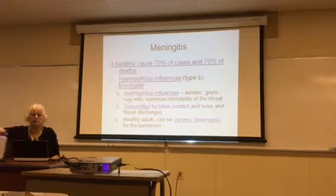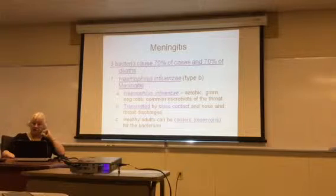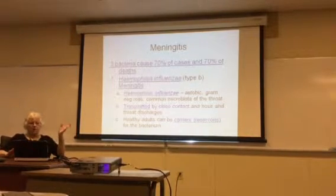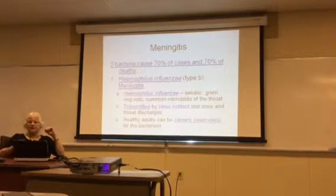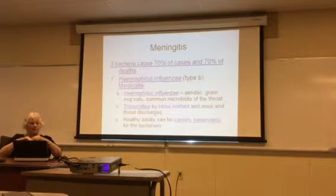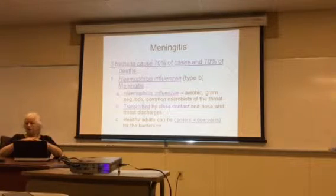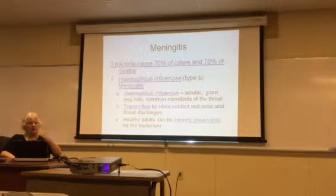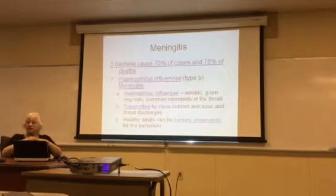Three bacteria cause 70% of the cases and 70% of the deaths. The first type is Haemophilus influenzae type B. Years ago they thought it caused influenza, but now they know it isn't responsible for influenza — the name just remained. It is an aerobic gram-negative rod and common microbiota found in your throat. It gets transmitted by close contact and through nose and throat discharges. Some people can be healthy carriers with no signs of infection and serve as the reservoir for the bacteria.